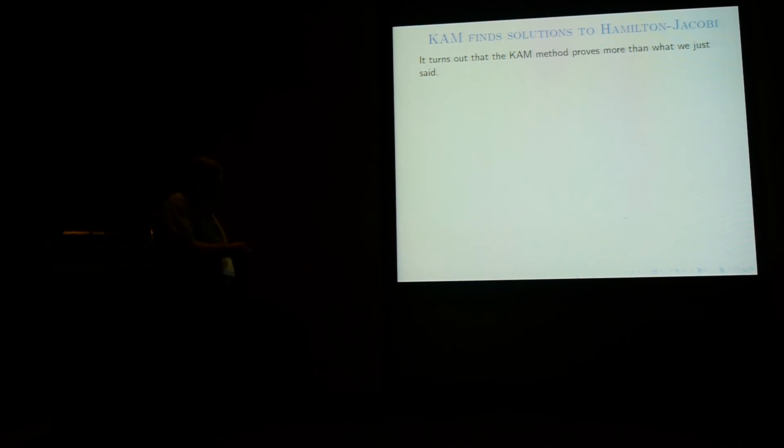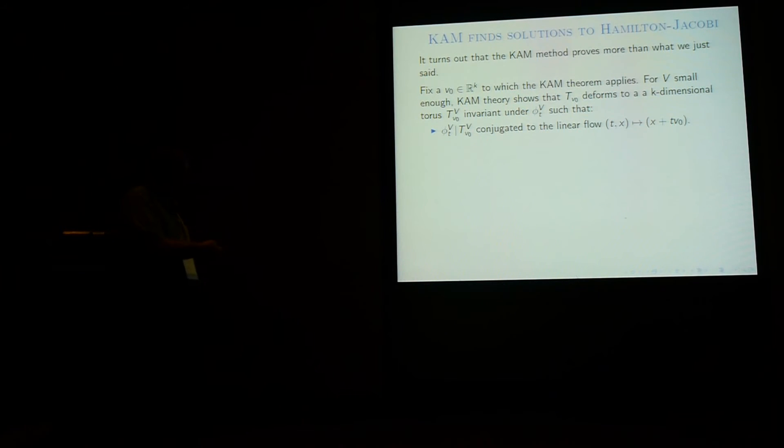In fact, not only do the Tv persist for some v, but the set of v's for which this is possible tends to fill a set of full Lebesgue measure in v as the perturbation vanishes. So you have more and more invariant tori given to you by KAM theory. In fact, KAM theory finds solution to Hamilton-Jacobi equation. Let me try to explain that, and I apologize for the heavy notation, but I have too much dependence on too many things. So you fix a v0 to which you can apply the KAM theory. So the KAM theory puts some arithmetical condition on v. And for v small enough, it shows you that this torus deforms to a k-dimensional torus invariant under phi_v t.